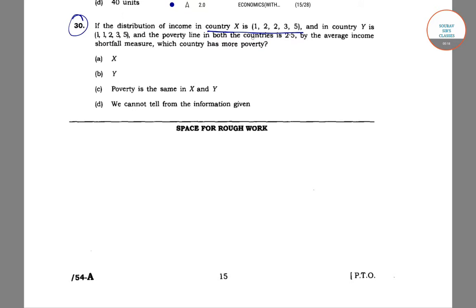As you can see here, in country X the income distribution is as follows: 1, 2, 2, 3, 5. And in country Y the income distribution is: 1, 1, 2, 3, 5. In both countries, the poverty line is at 2.5.